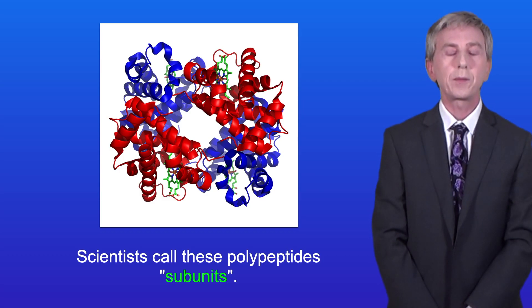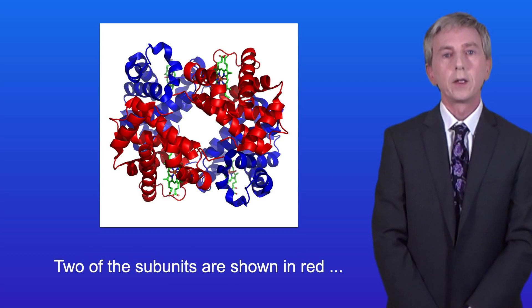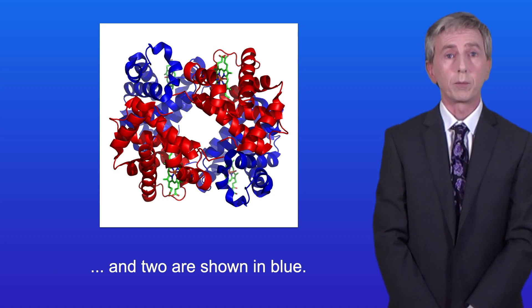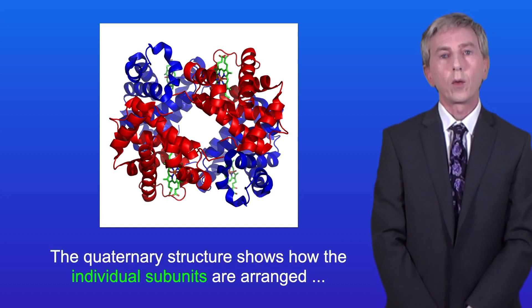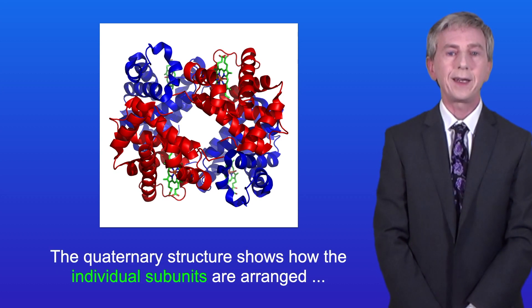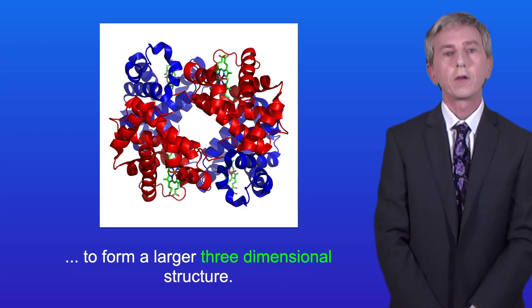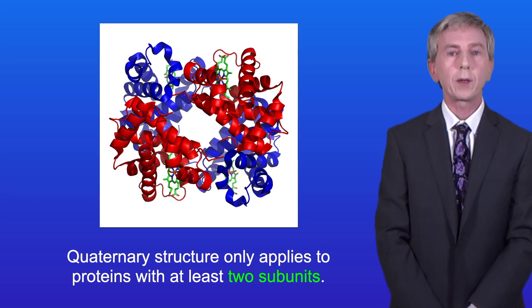Scientists call these polypeptides subunits. Two of the subunits are shown in red, and two are shown in blue. The quaternary structure shows how the individual subunits are arranged to form a larger three-dimensional structure. Quaternary structure only applies to proteins with at least two subunits.